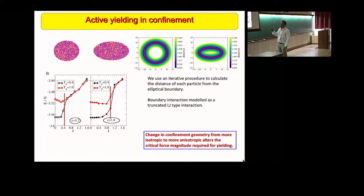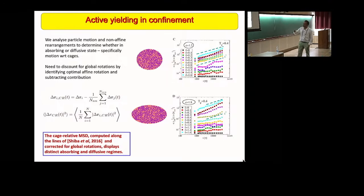The last point is, how does the confinement geometry affect the transition? One does expect, in general, that confinement will induce some changes in behavior. As a preliminary investigation, we looked at two geometries, one close to circular and the other more ellipsoidal, elliptical, in two dimensions. What we find is that for this more symmetric geometry, yielding occurs at a smaller value than the more elongated geometry, where it happens at higher active forces. That transition is also associated with a non-diffusive to diffusive transition.